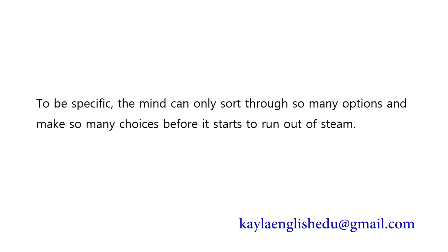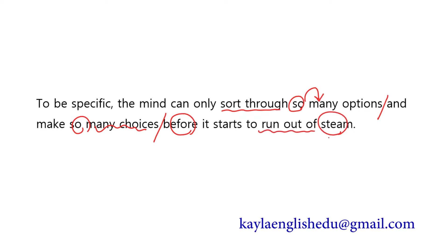구체적으로 말하자면, 마음은 so many options를 sort through(자세히 살펴보다)할 수 있고 그렇게 많은 결정을 할 수 있다 — before it starts to run out of steam(에너지가 바닥나기 시작하기 전에). 여기서 steam은 우리가 가진 마음의 에너지 정도로 바꿔도 괜찮겠죠.